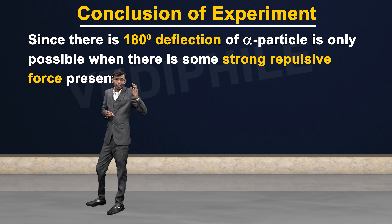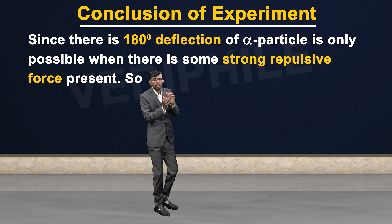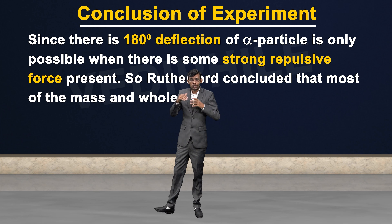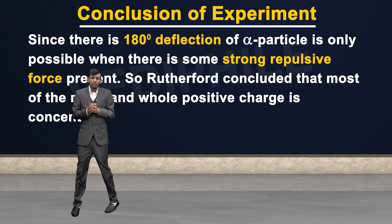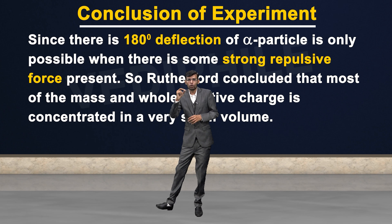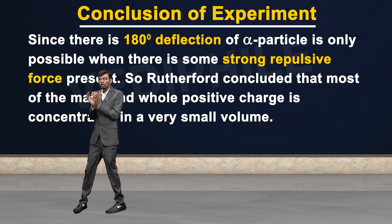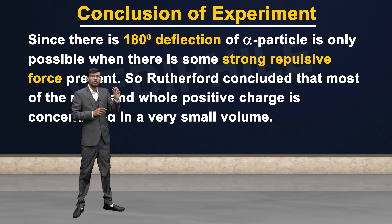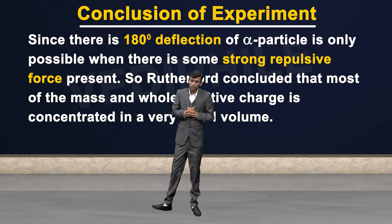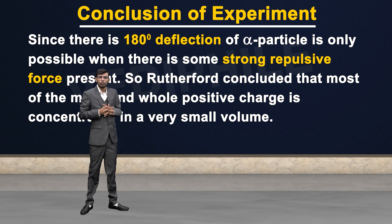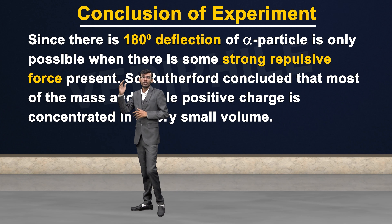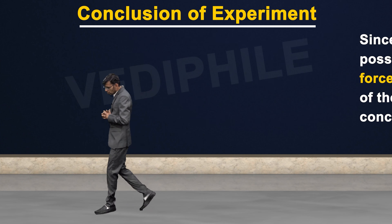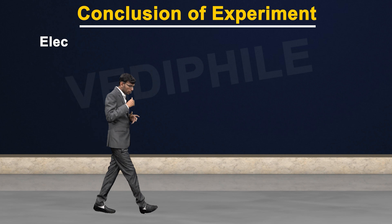This means we can say that the positive charge of the atom is concentrated. So we can say that the whole mass of the atom and the whole positive charge of the atom is concentrated in a very small space or volume in the atom. The whole positive charge is concentrated in a very small region, and that charge is responsible for the strong repulsive force causing the 180-degree deflection.